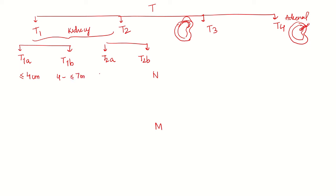In T2, we have T2a and T2b. T2a is 7 to less than or equal to 10 centimeters. T2b is when it is more than 10 centimeters. Remember, if it is 4 centimeters it is T1a, and 7 centimeters is T1b. 10 centimeters is T2a. Anything more than 10 is T2b. Or we can also easily remember as less than 7 is T1 and more than 7 is T2.